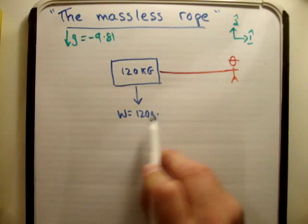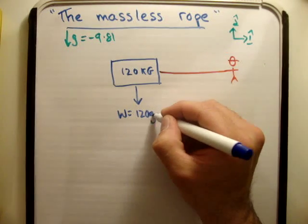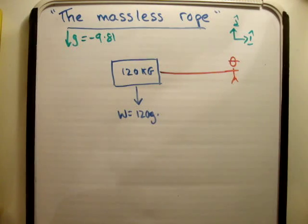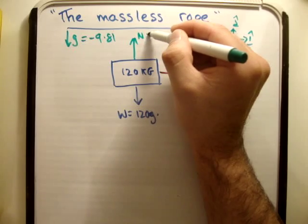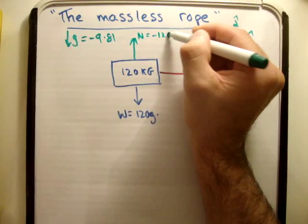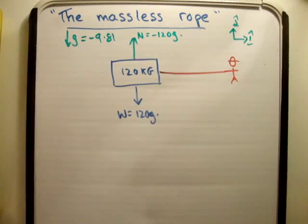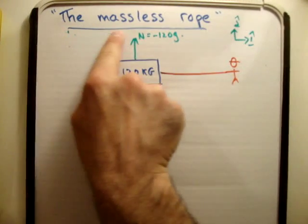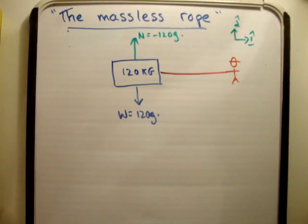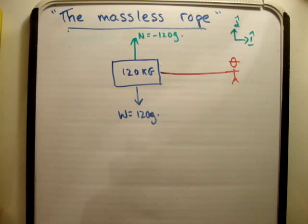This is a negative number because I define gravity as being negative. The weight of the body here is equal to 120g. As a result we have a normal force and the normal force is equal to minus 120g.